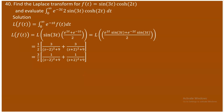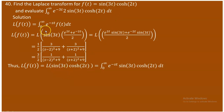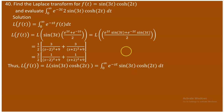That is the Laplace transform for this function. Now for the second part, you are asked to evaluate a given integral. Looking at the integral, it is nothing but the Laplace transform definition evaluated at a specific value of s. The function inside is sine(3t)·cosh(2t), which is exactly the function whose Laplace transform we just found.